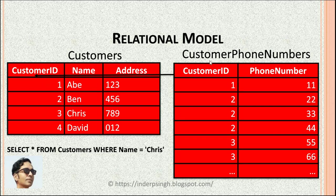Another relation is the Customer Phone Numbers relation, which has multiple rows and two columns: Customer ID and Phone Number. There is a relationship between the Customer ID of the Customer Phone Numbers relation and the Customer ID of the Customer relation — this is called a Foreign Key relationship.